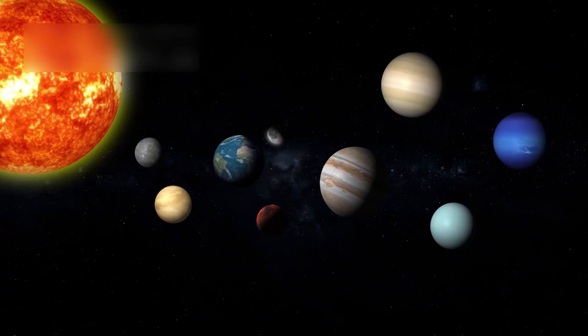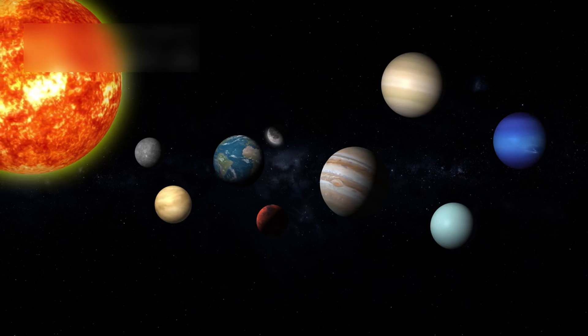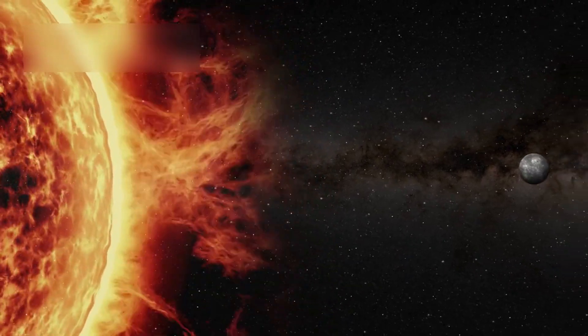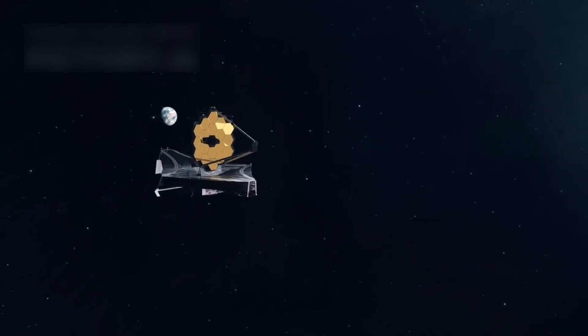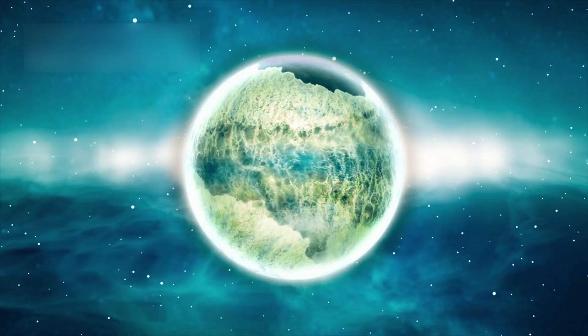Another thrilling system under study is TRAPPIST-1, which hosts seven Earth-sized planets. At just 40 light years away, several of its worlds lie within the habitable zone. JWST is already studying their atmospheres. One planet, TRAPPIST-1e, is especially promising. It's roughly Earth-sized and could have liquid water.